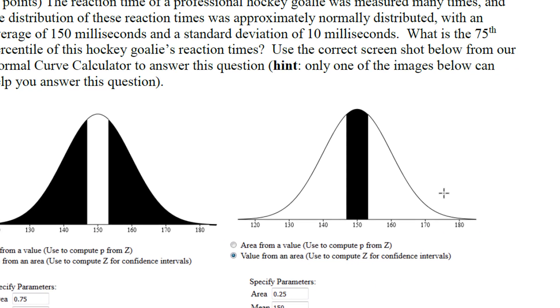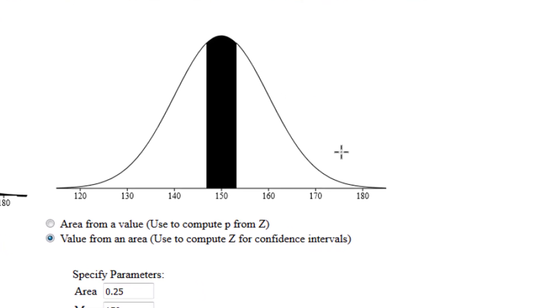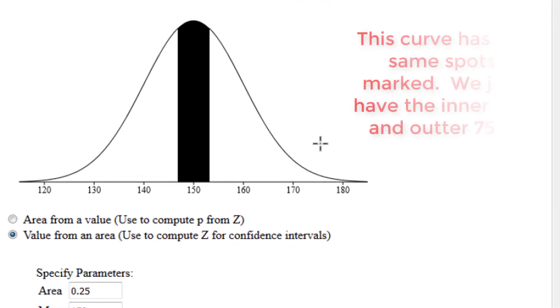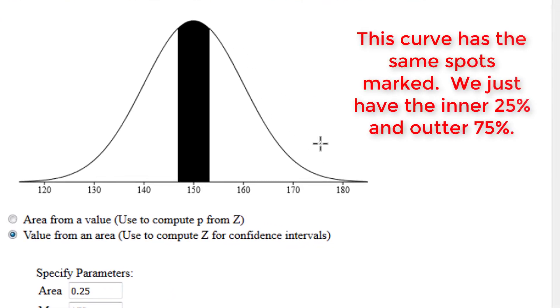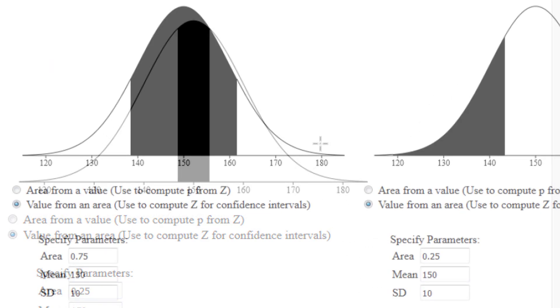The next curve shows us the exact same thing just with the image kind of flip-flopped. We have the middle 25 percent and the outer 75 percent, so we can't use this image to solve for answers either.